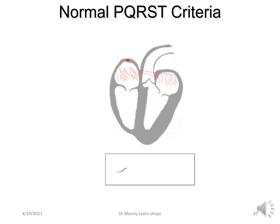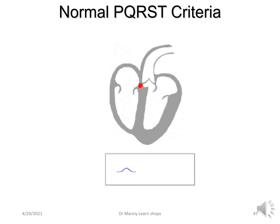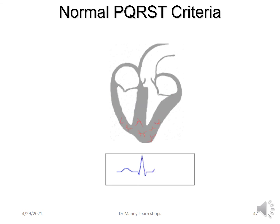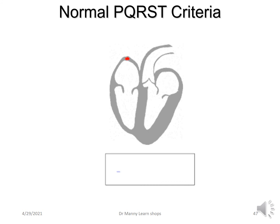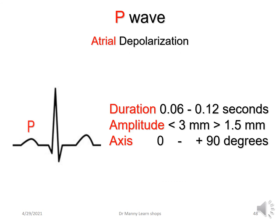I haven't mentioned the U-wave, and I won't — if it's important to you, you can review the U-wave. Now let's look at the normal PQRST criteria. The P-wave represents atrial depolarization. Normally it is between 0.06 to 0.12 seconds — anything longer than 0.12 seconds is potentially problematic. The amplitude is less than three small squares in height but must be more than 1.5 millimetres in height. The axis is typically between 0 and plus 90 degrees because of left ventricular dominance.